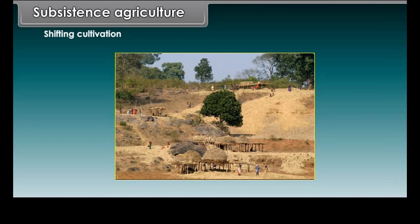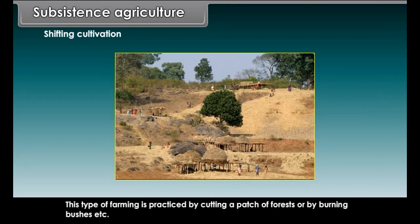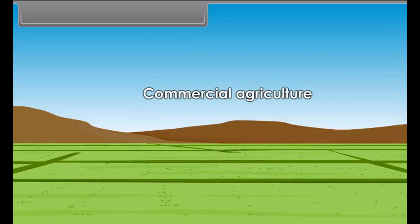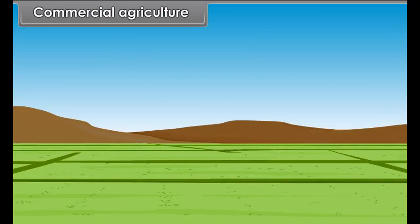Shifting cultivation is a type of farming practiced by cutting a patch of forest or by burning bushes. The patch of land is cleared and then cultivated. It is also known as slash and burn agriculture.